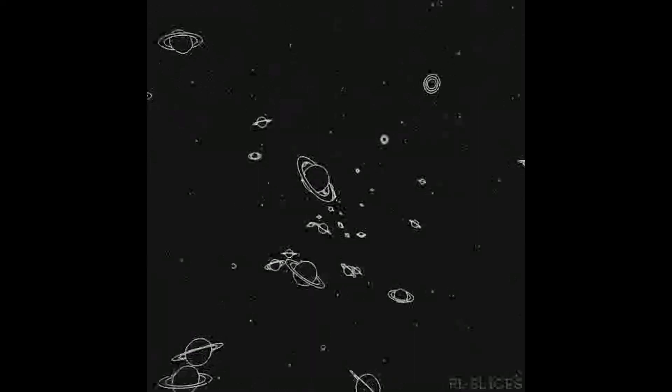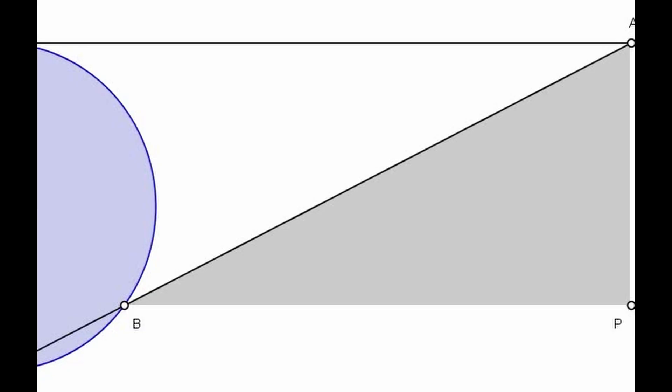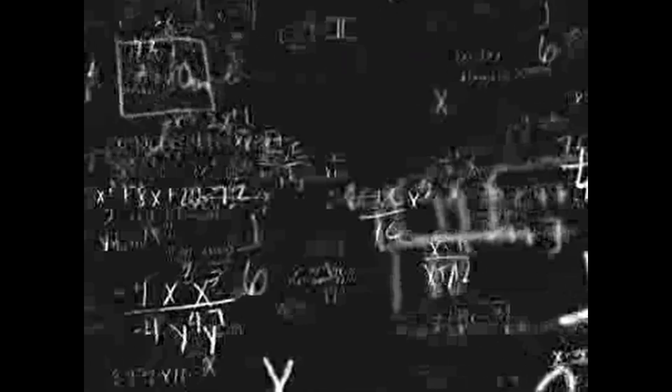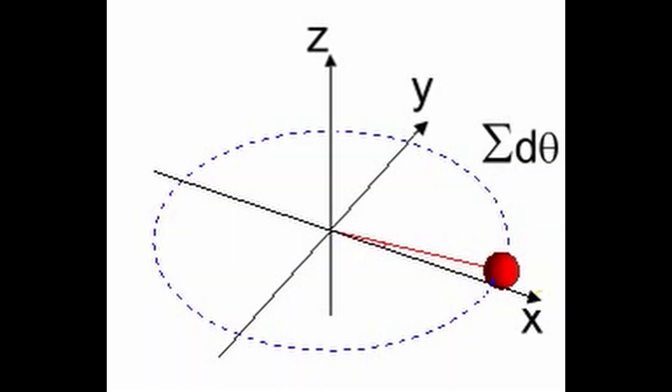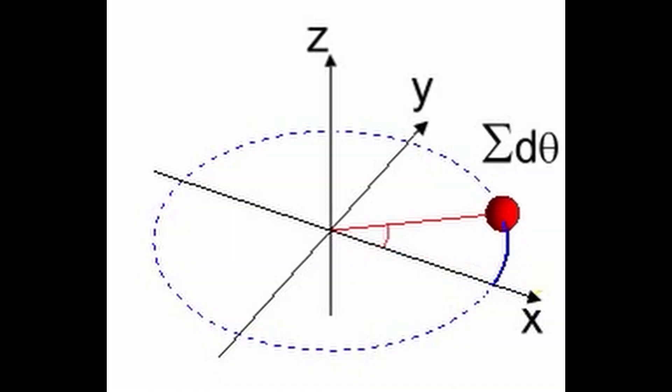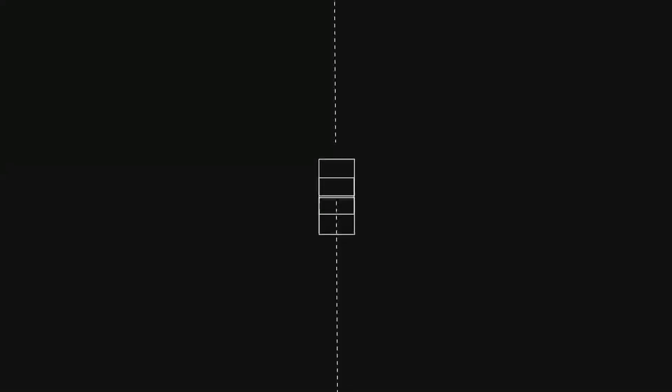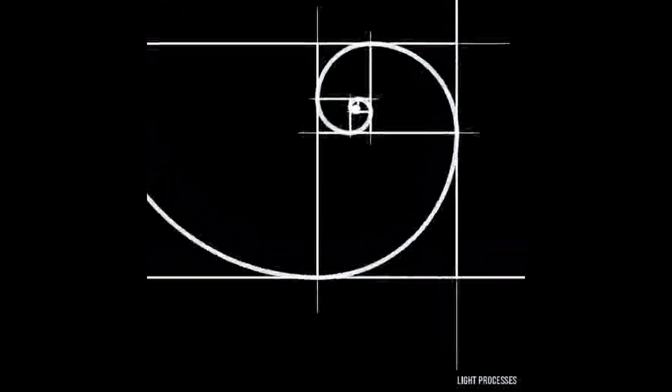Algebraic surfaces include quadric surfaces such as the sphere x² + y² + z² = r², the ellipsoid x²/a² + y²/b² + z²/c² = 1, and the hyperboloid of one sheet x²/a² + y²/b² − z²/c² = 1. Algebraic varieties can also exist in higher dimensions beyond curves and surfaces; these higher-dimensional varieties cannot always be visualized but play a crucial role in algebraic geometry.